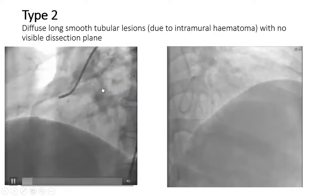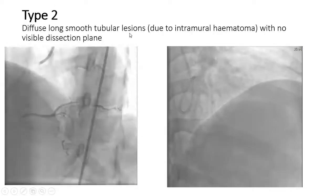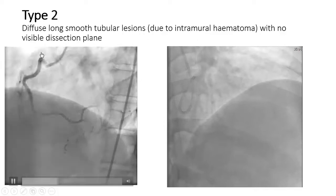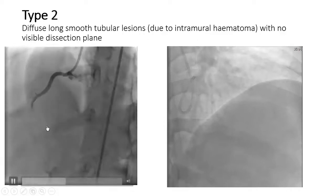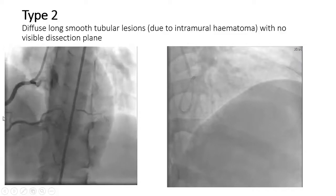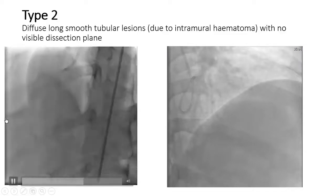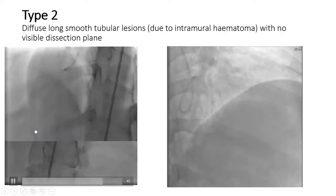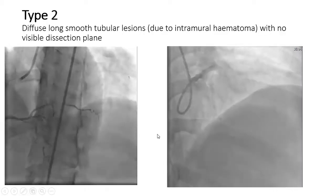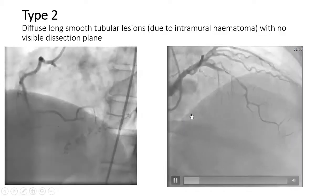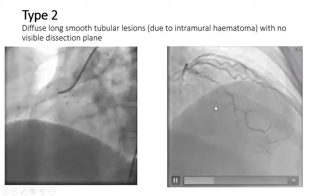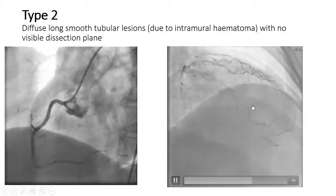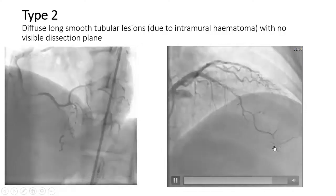The second type is diffuse long smooth tubular lesions due to intramural hematoma with no visible dissection plane. As you can see in the RCA, there is a long smooth tubular mid portion, also in PLB and PDA arteries. In another patient, you can see the long smooth tubular lesions of LAD.